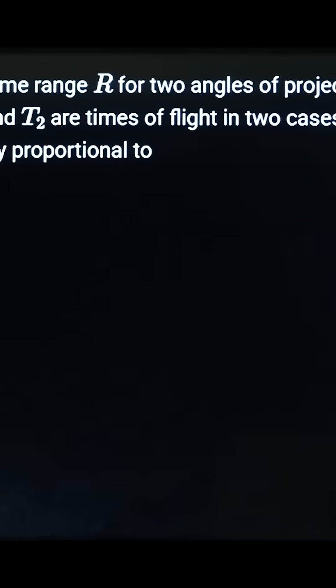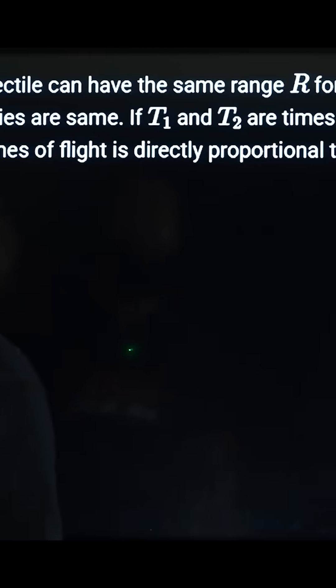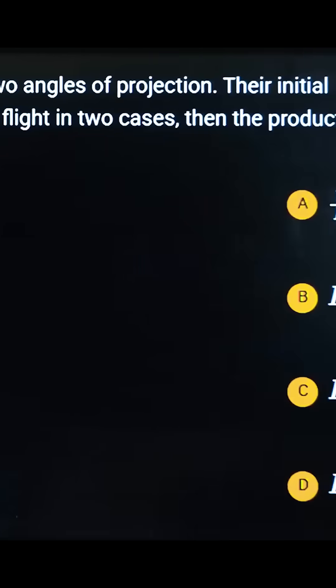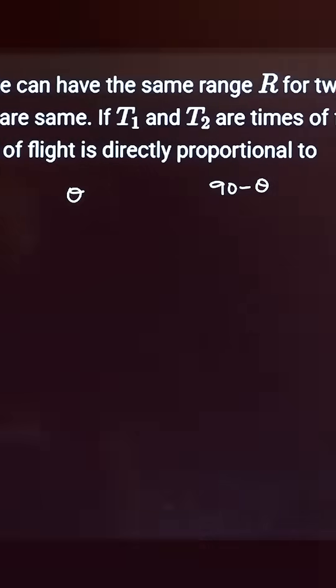A projectile can have the same range R for two angles of projection. Their initial velocities are the same. Here we have theta and 90 minus theta. If T₁ and T₂ are the times of flight in two cases, then the product of times of flight is directly proportional.